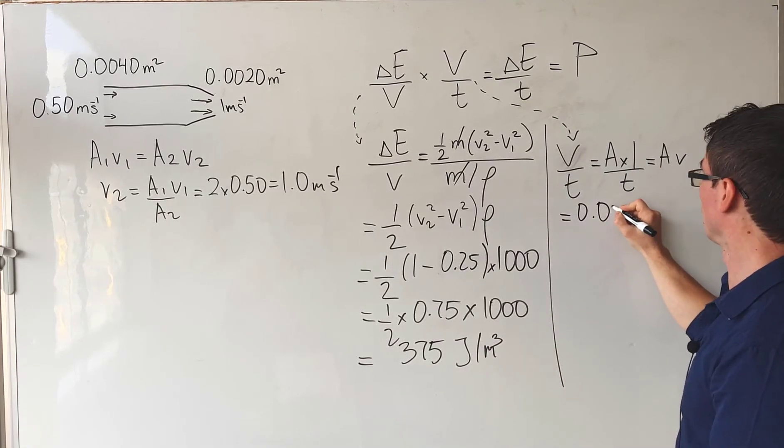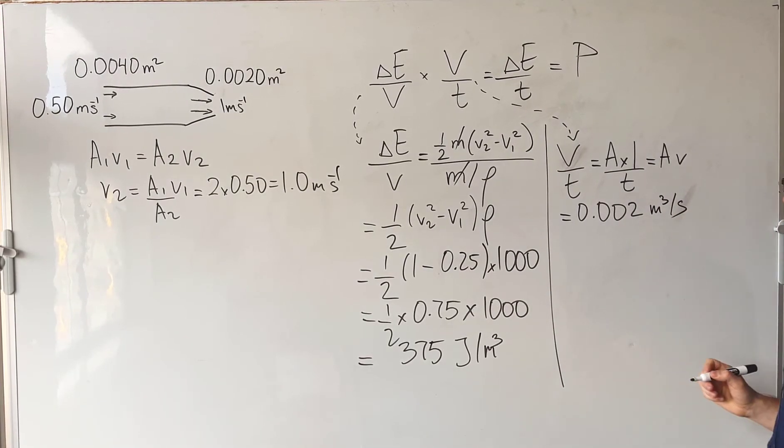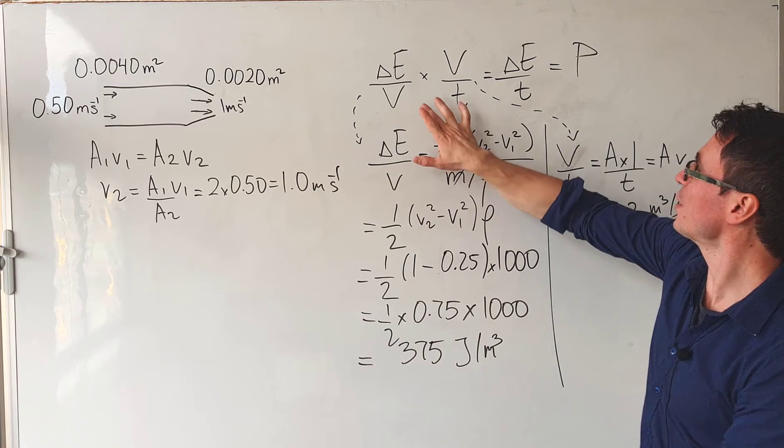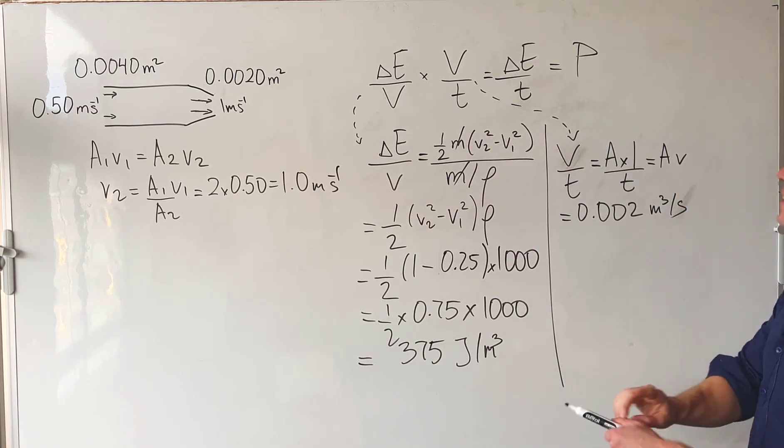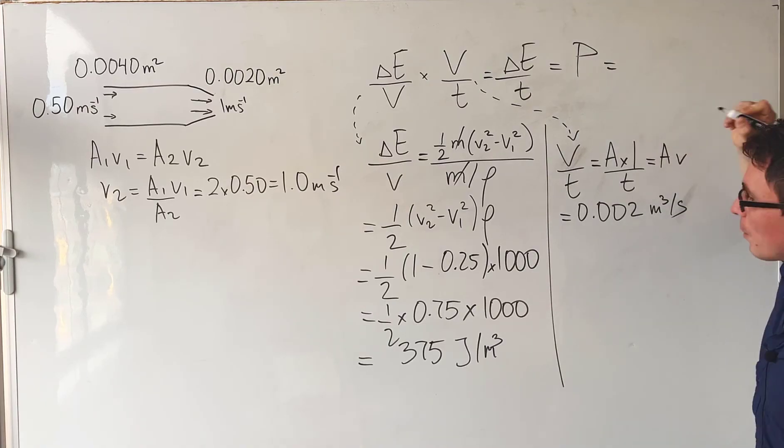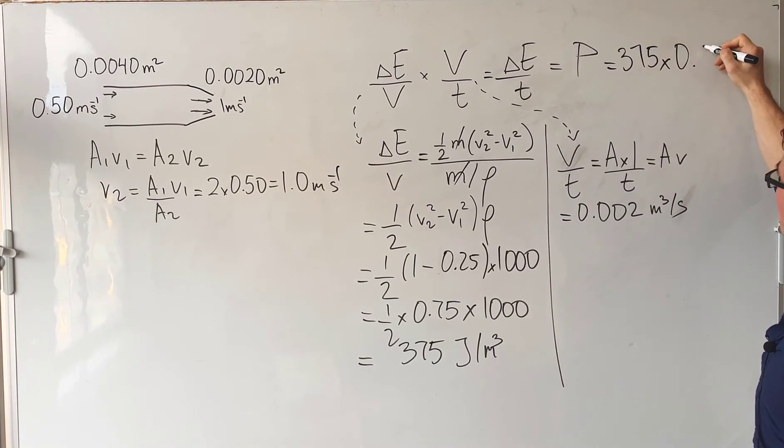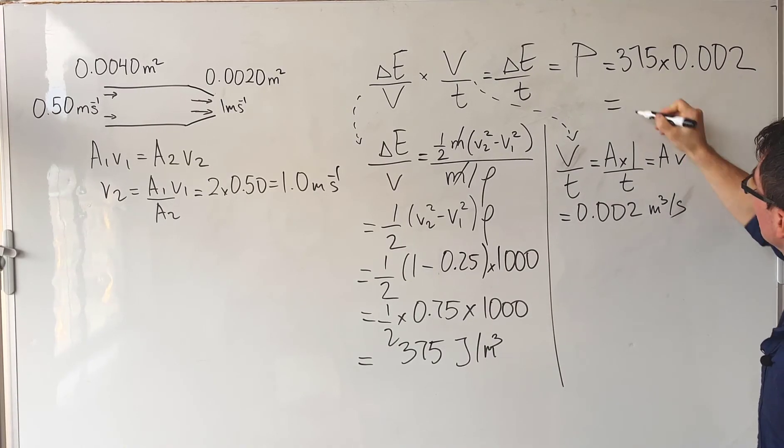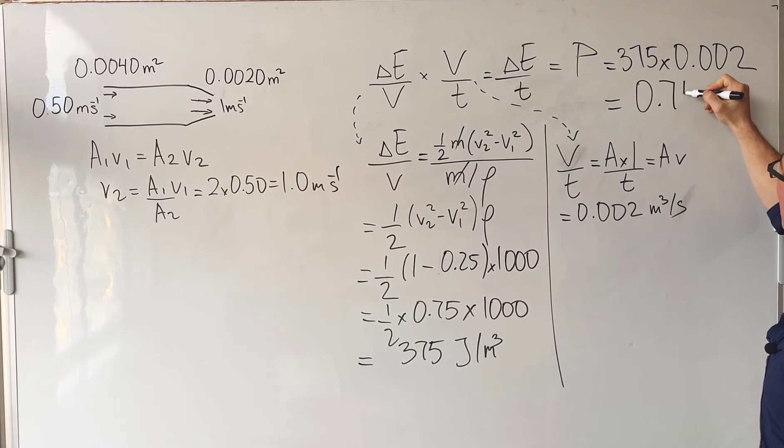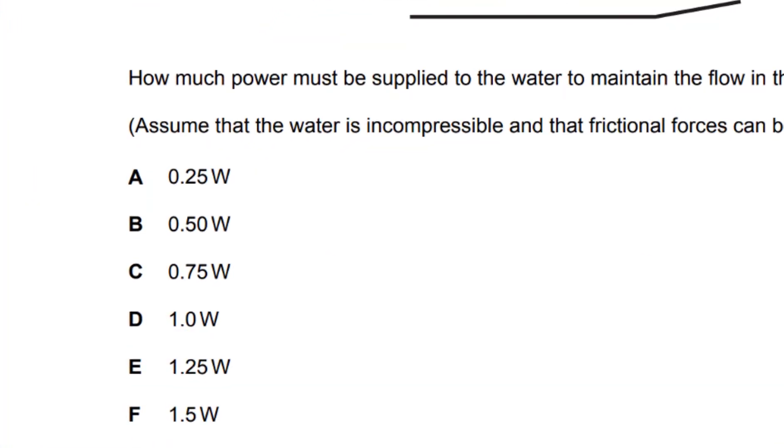If I multiply this number by this number, I should get the power. So the power will be equal to 375 multiplied by 0.002, which is equal to 0.75 watts, and the correct answer is C.